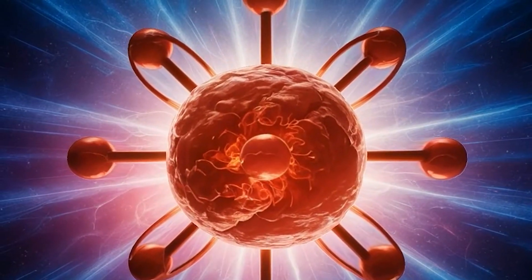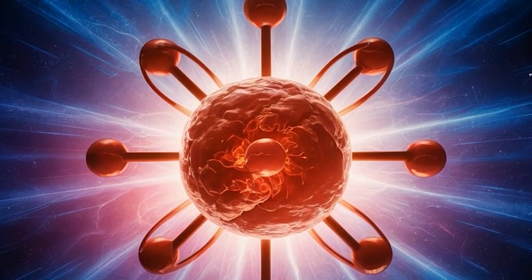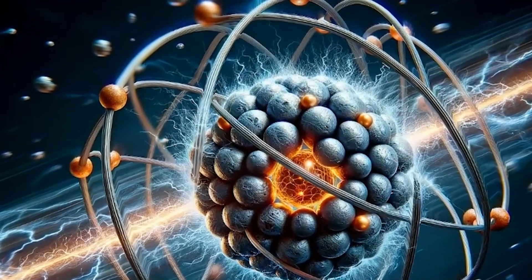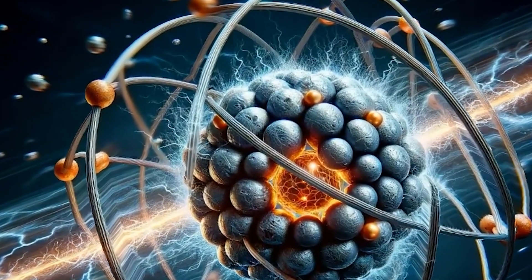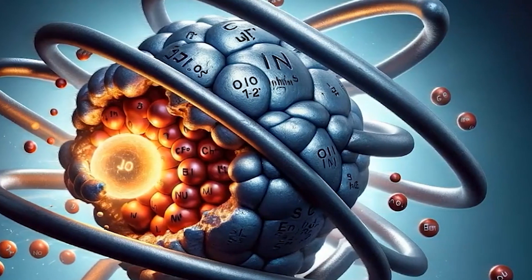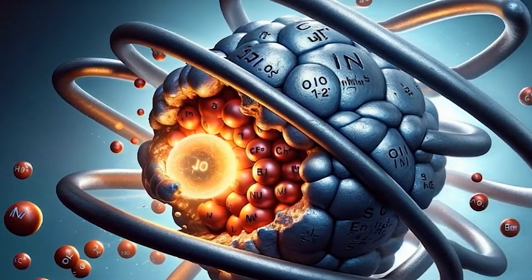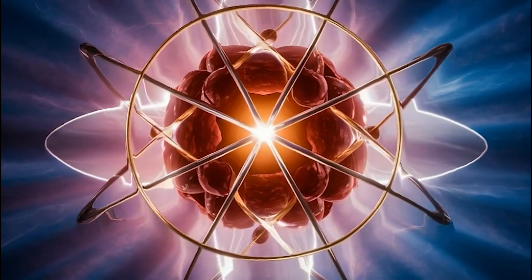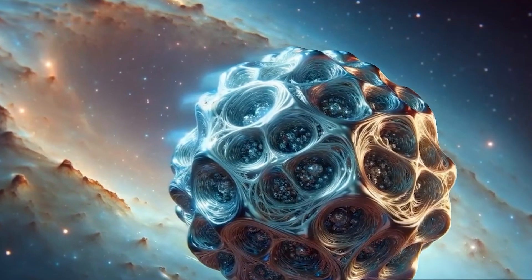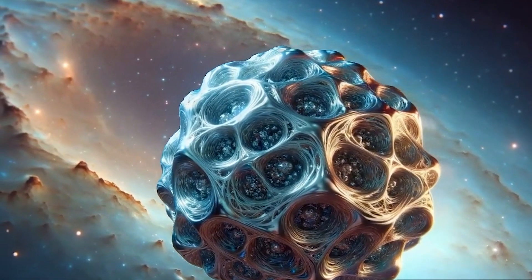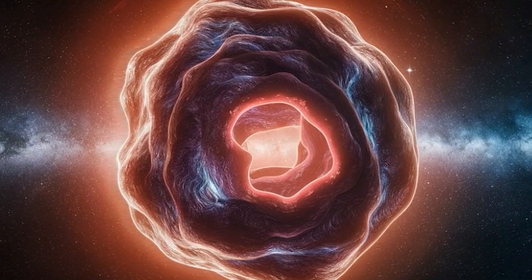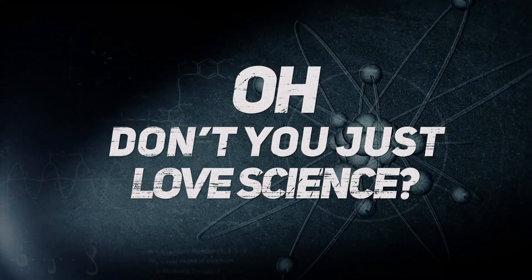We'll take an iron atom and start to squeeze it with tremendous force. Sooner or later, the atoms, neutrons, and protons will disintegrate into quarks. Add more pressure, and some of these quarks will become heavier and turn into strange quarks. What we have now isn't an iron atom, but a strangelet, a tiny piece of strange matter. Oh, don't you just love science?